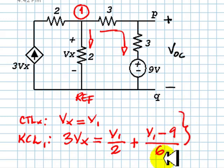That system of two equations and two unknowns gives us the value for V1, and we solve it.